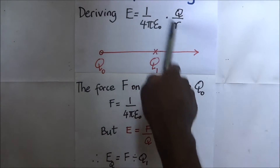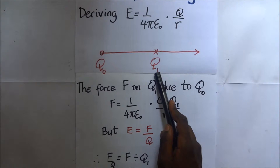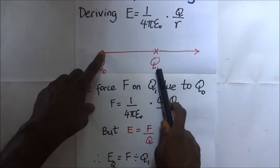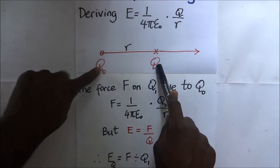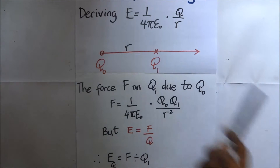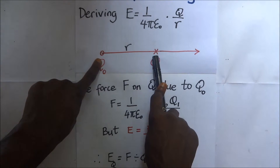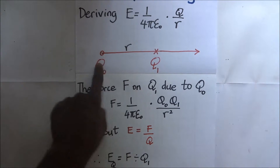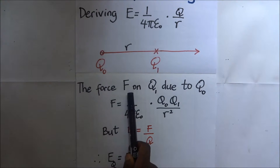We are deriving E, which is equal to one over four pi epsilon naught times the charges. We have two point charges here: charge Q naught and charge Q1, separated by a distance r. The force acting on Q1 due to Q naught is found using Coulomb's law of electrostatics, which states that for two point charges the force between them is directly proportional to the product of those charges and inversely proportional to the square of their separation.